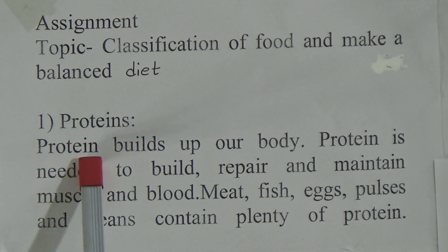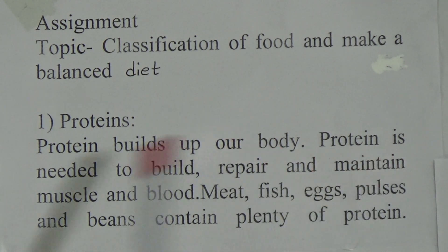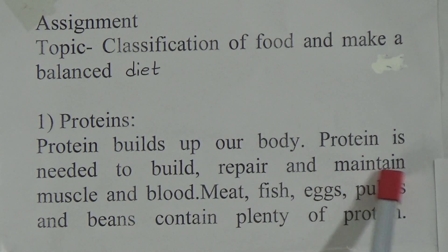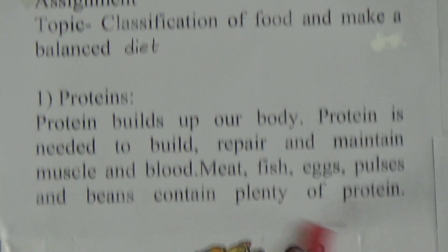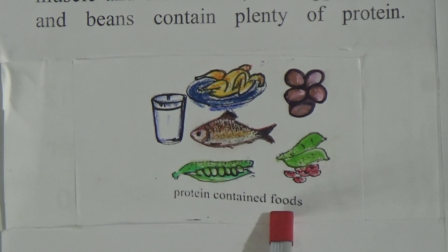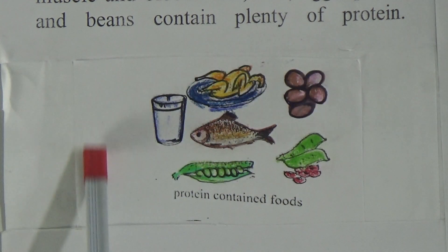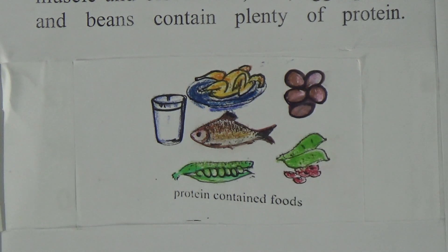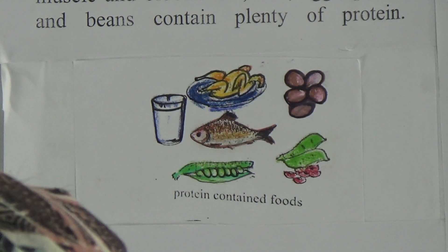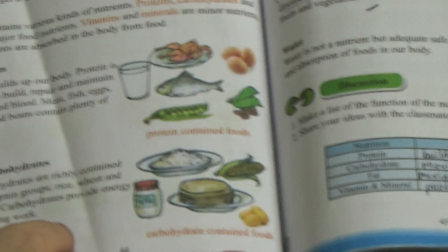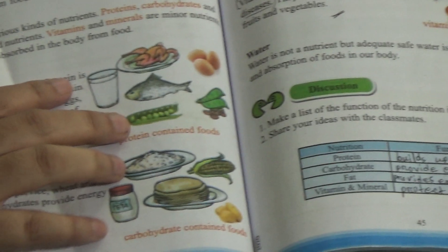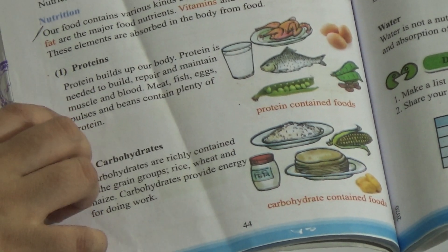The first point is proteins. Protein builds up our body. Protein is needed to build, repair, and maintain muscle and blood. Meat, fish, eggs, pulses, and beans contain plenty of protein. Here are some foods — these are protein-containing foods. You have to draw this picture in your book. You can see all the pictures here on pages 44 and 45. Draw from this page and write all the points from here.